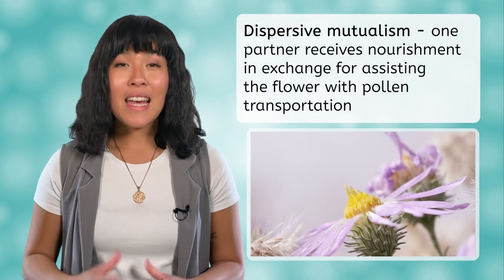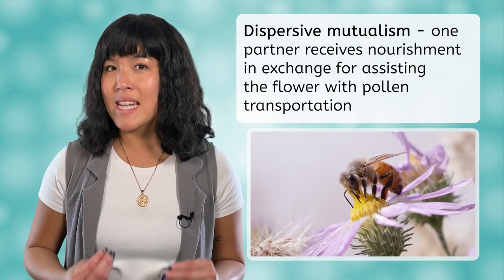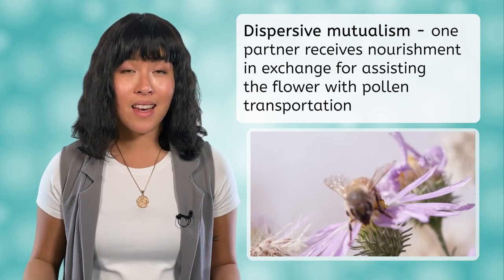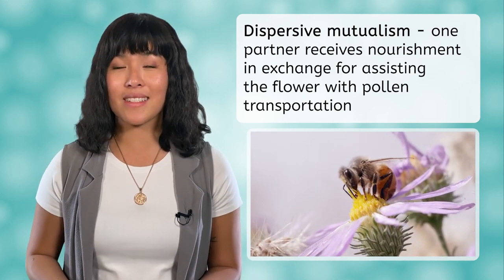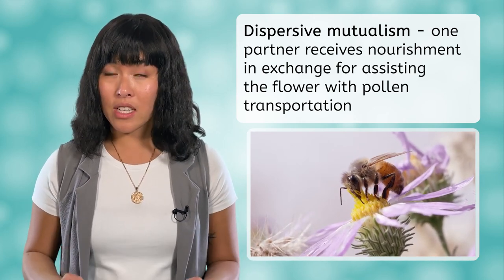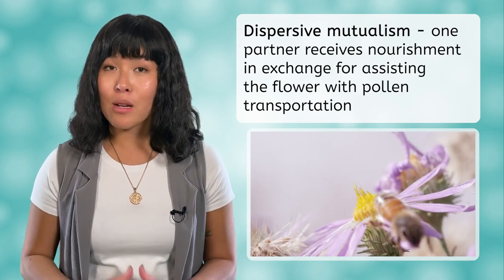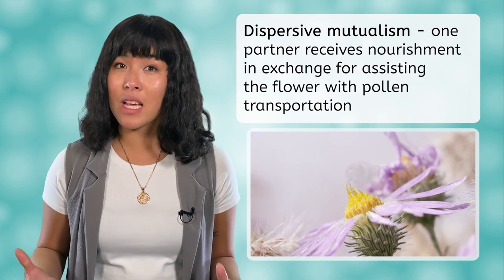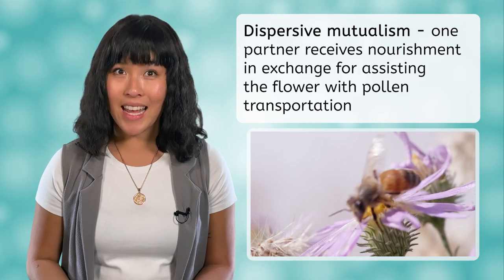Honeybees and flowering plants demonstrate the final type of mutualism: dispersive mutualism. The honeybees receive nourishment from the nectar in flowering plants while helping the plant by transporting its pollen to another plant. This relationship is extremely important — approximately 70 to 90 percent of the plants in the rainforest rely on this method of pollination.